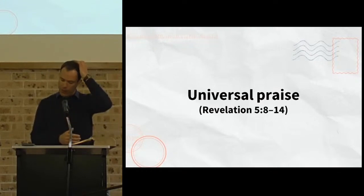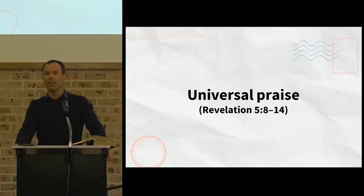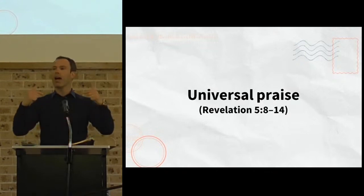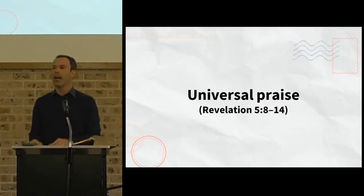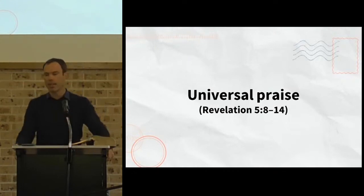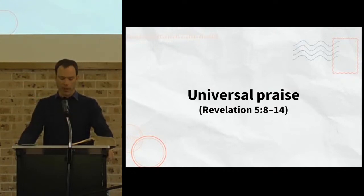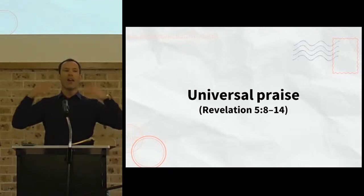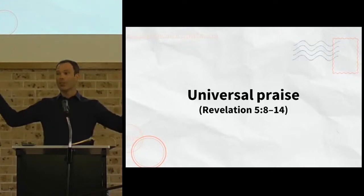Those who in chapter 4 had fallen in worship before the Lord God Almighty, they now fall in worship before the lamb, verse 6. And then this praise cascades outwards. In verses 9 and 10, the inner circle of God's heavenly court sings, the four living creatures and the 24 elders. Then in verses 11 and 12, the rest of the heavenly court join in, as thousands upon thousands, 10,000 upon 10,000 of angels, hundreds of millions of them, sing together.